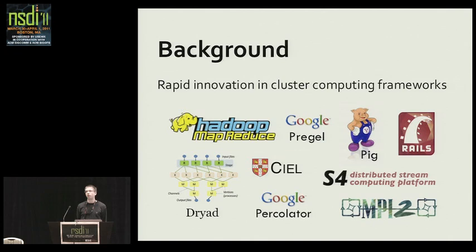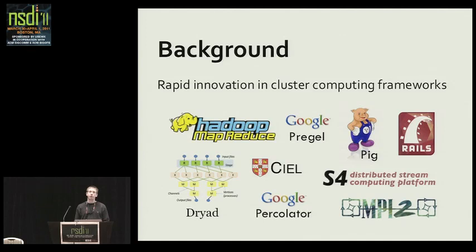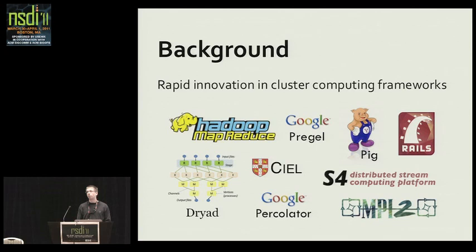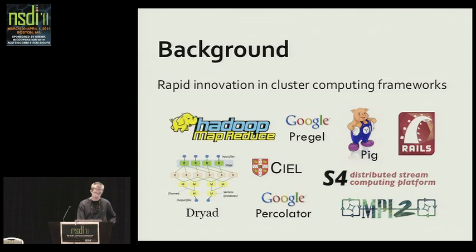We're going to call these systems frameworks for the purpose of this talk. There's MapReduce and Dryad — some of the earliest ones — but there's a wide variety of others. In the past two years, Google has talked about several other frameworks very different from MapReduce, including Pregel, a specialized model for graph processing, and Percolator, an incremental web indexing system. Users at Yahoo are also using MPI because it's a better programming model for some applications, and web applications like Ruby on Rails are a big portion of the data center workload.